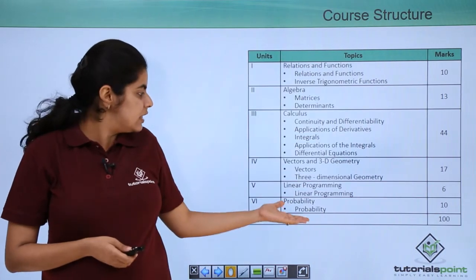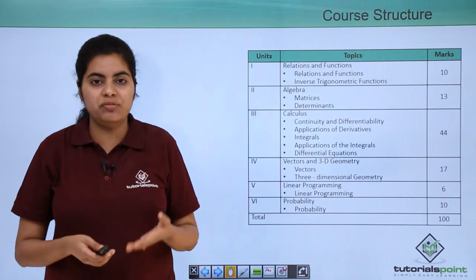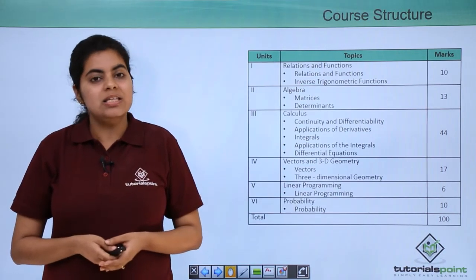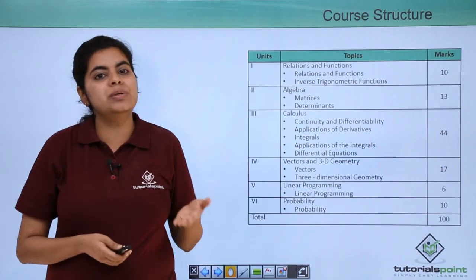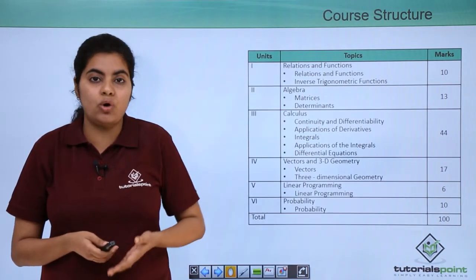The last unit mentioned in the syllabus is probability. Probability you have been studying from your junior classes as well. So in class 12 you'll be studying probability in more detail. This is again very important if you have to opt for engineering.